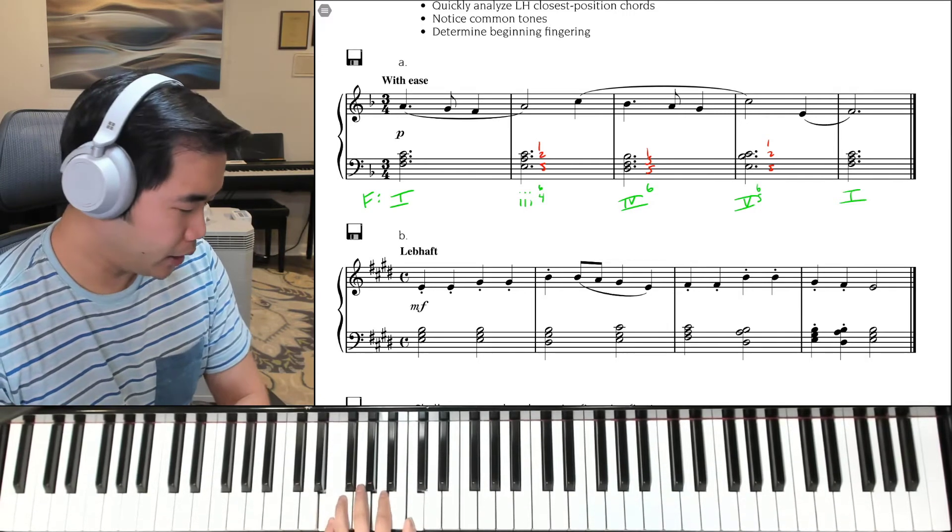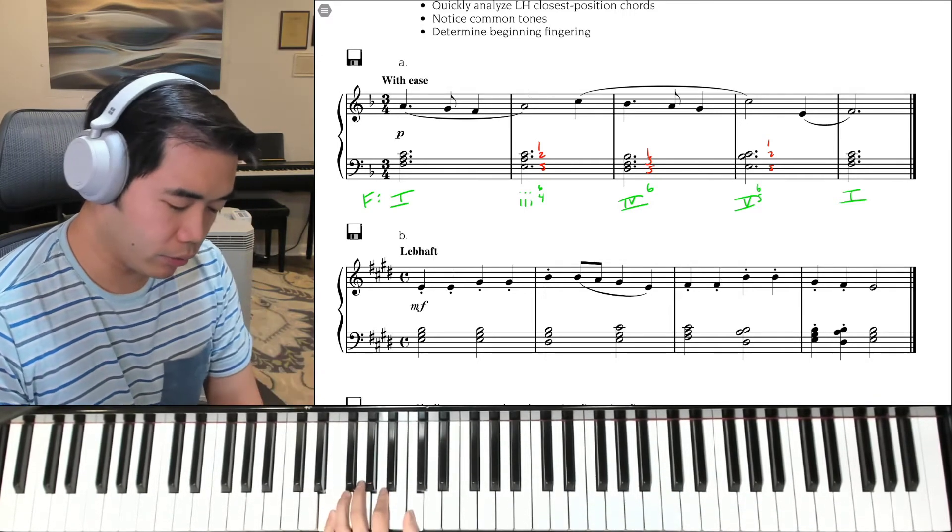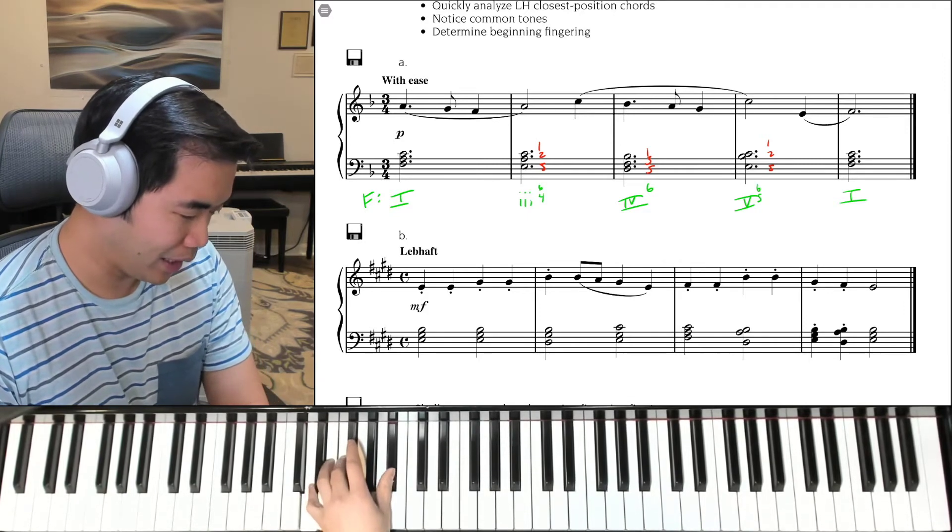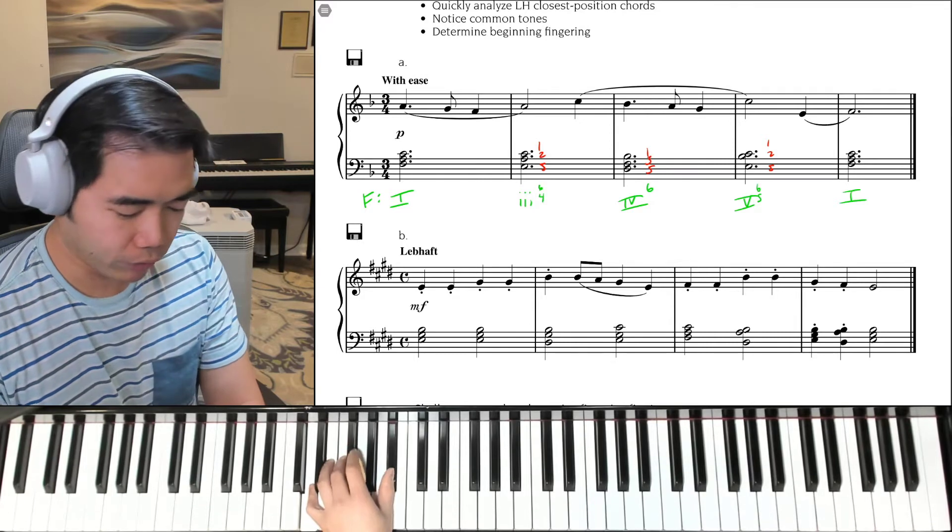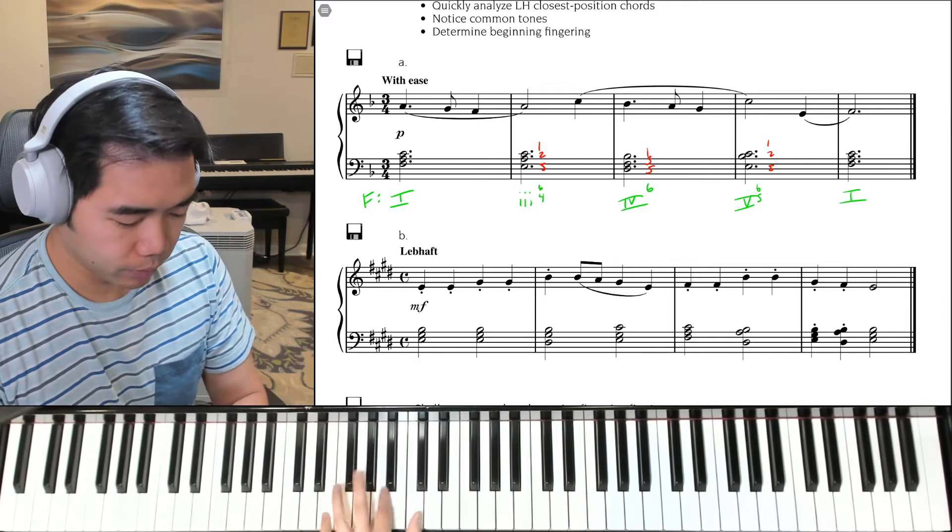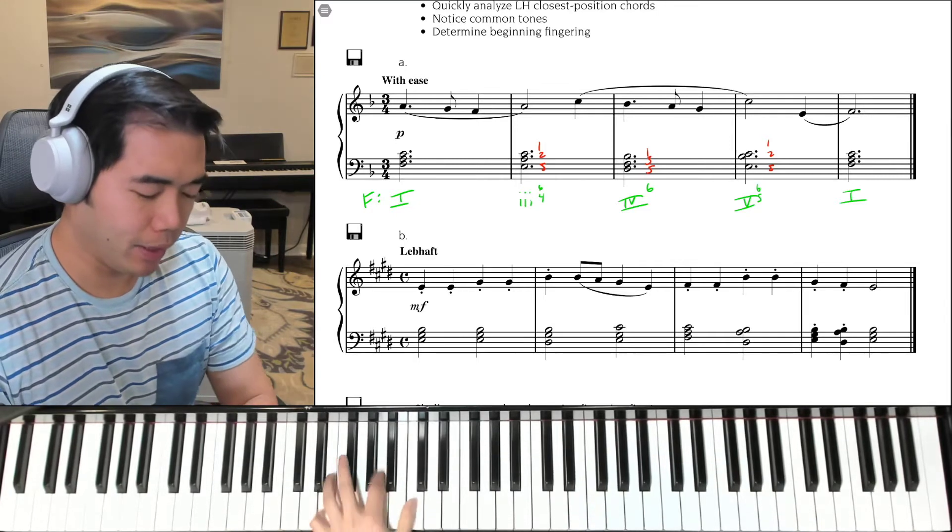From there, to get to the 4 chord in the 1st inversion, we go to D, F, B flat. Like that. Let's try just the first 3 chords. Here we go. F major, then A minor, and then B flat major.